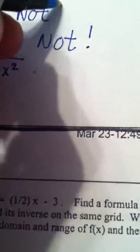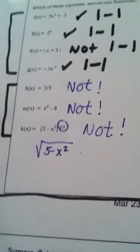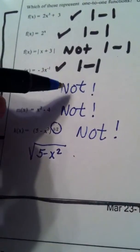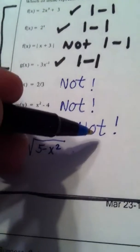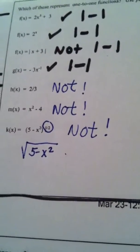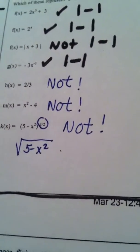And nope, that is not a one-to-one function either because it fails the horizontal line test. So what it means when it says not: if it's not a one-to-one function, it does have an inverse. You can always find an inverse, you can always switch x and y.